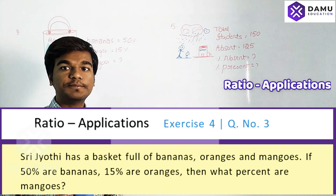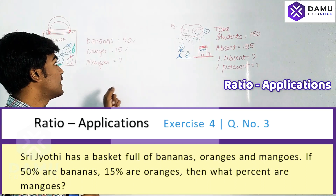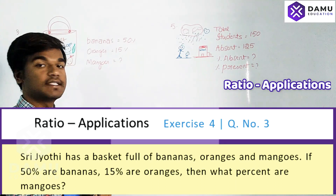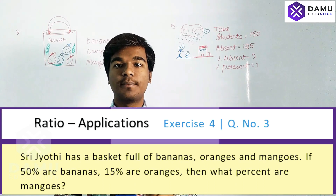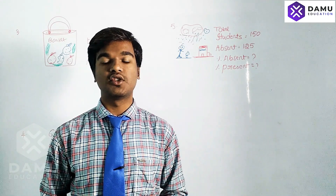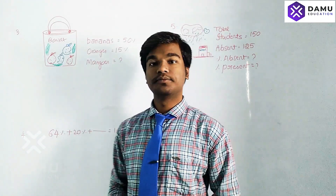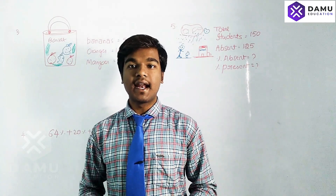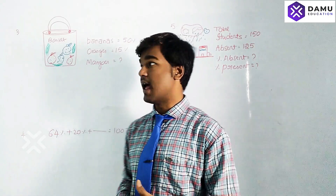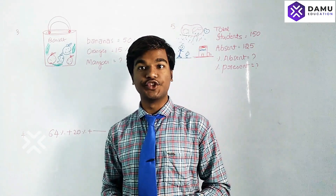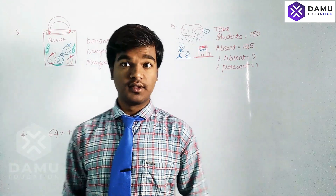What percentage of fruits are bananas? Bananas are 50%, oranges are 15%. So the total of bananas and oranges is 65%, which means mangoes will be the remaining 35%.